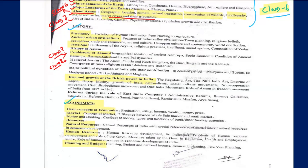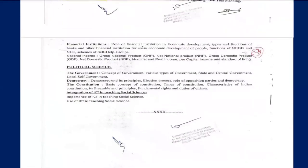Class six, seven, eight — a lot of basic topics. So what is it? National income. The national income, the GDP — gross domestic product. The NDP. The nominal and real income. Per capita income. National income.